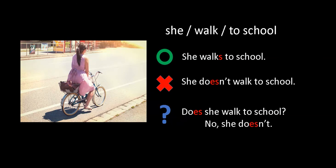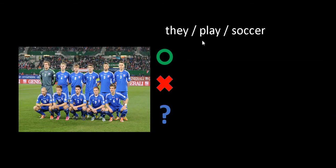Now we've got many people and our words are they, play, soccer. This should be very easy. Our first sentence: simply they play soccer. No changes there. Now we need to make the X sentence, and remember with they we use don't. So they don't play soccer.